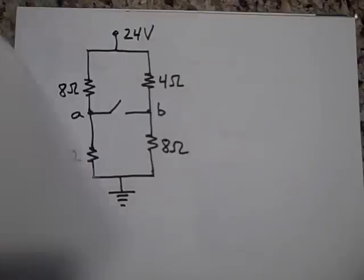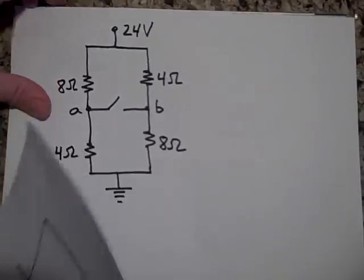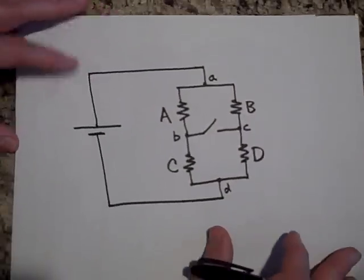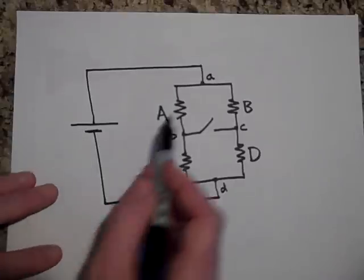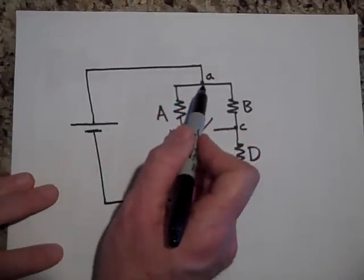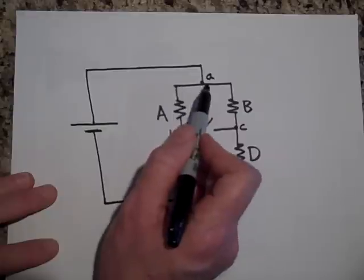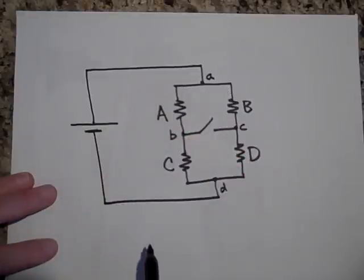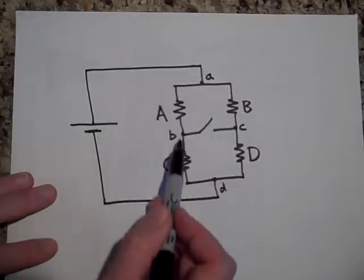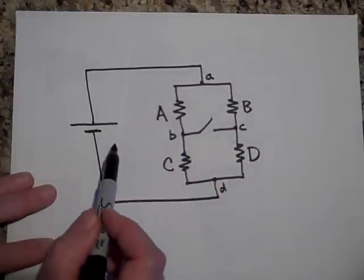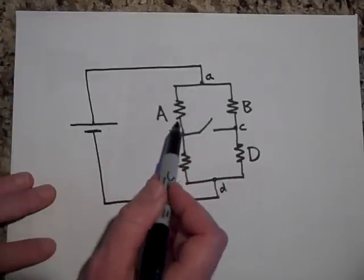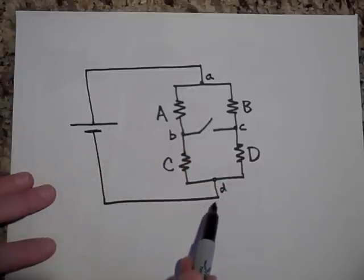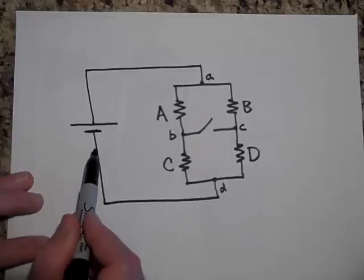In any case, Kirchhoff's loop rule and junction rule is how you do these. Let me explain. Let's go back to the original circuit right here. For the junction rule, the current going into this junction has to equal the current coming out. Not only that, but if we go down this way, if this is a certain amount of voltage, then you got to drop that voltage by the time you get down to here because of the loop.